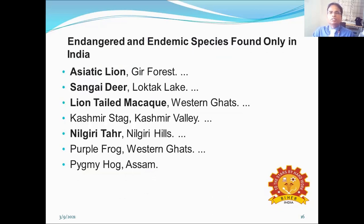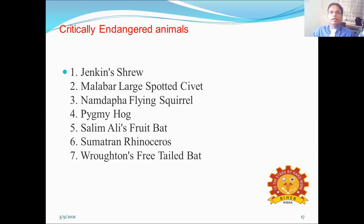Endangered and endemic species found in India include: Asiatic lion (found in Gir Forest of Gujarat), Sangai deer (Loktak Lake), Lion-tailed macaque (Western Ghats), Kashmir stag (Kashmir valley), Nilgiri tahr (Nilgiri Hills), Purple frog (Western Ghats), and Pygmy hog (Assam). Critically endangered animals include: Jenkin's shrew, Malabar large-spotted civet, Asiatic cheetah (Tibet), Namdapha flying squirrel, Pygmy hog, Salim Ali's fruit bat, Sumatran rhinoceros, and free-tail bat. We also have one-horned rhinos in Assam.